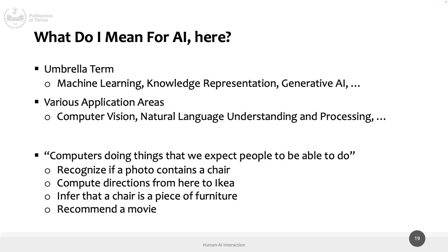Since we're speaking about human-AI interaction, let's clarify what we mean by AI here. In this course we take AI as an umbrella term — not specifically just machine learning or deep learning, but everything that falls under the AI term. It could be machine learning, knowledge representation, generative AI like ChatGPT, applied in computer vision, natural language understanding, or the medical sector. My definition: a computer doing things that we expect people to be able to do.